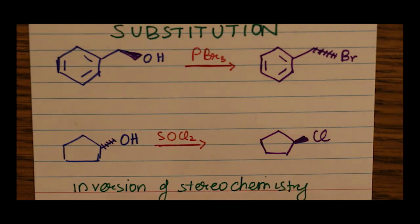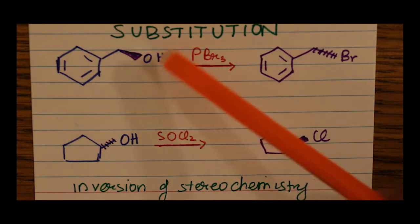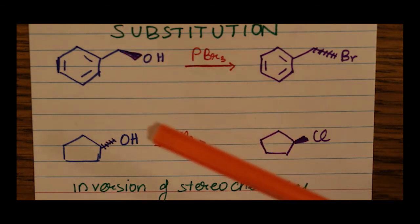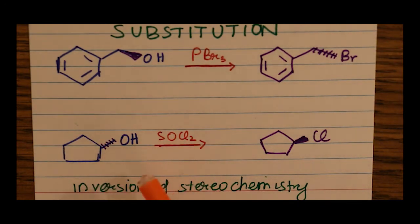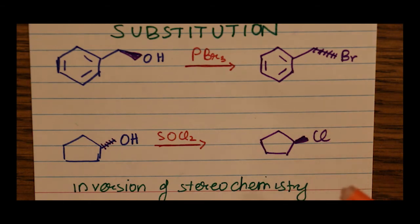This occurs with inversion of stereochemistry. That means if we had our OH group coming towards us in three-dimensional space, we now have our Br group pointing away from us. Similarly, in the other example, we have the OH on a dash — going into the page — and we get a Cl on a wedge, meaning coming towards us.